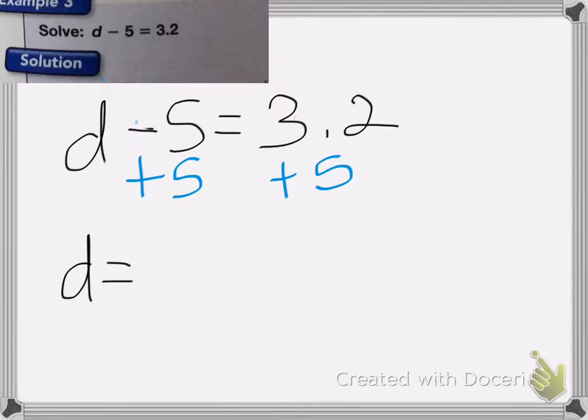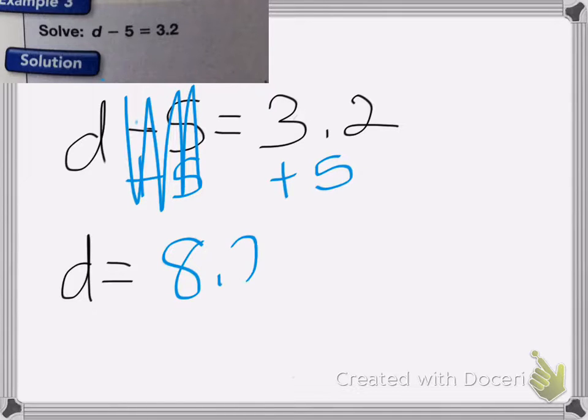Now, if I add negative 5 plus 5, that just cancels out, I get 0. And then I have 3.2 plus 5, which is equal to 8.2. So I got the answer either way. So whichever way is easiest for you to think about is the way you should try.